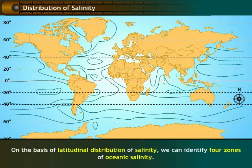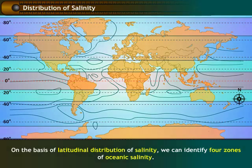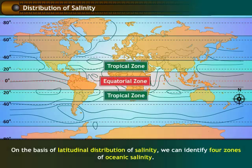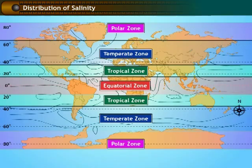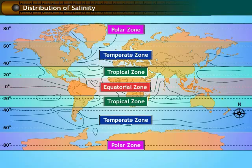On the basis of latitudinal distribution of salinity, we can identify four zones of oceanic salinity. These are the equatorial zone, tropical zone, temperate zone, and polar zone. Let us now study the distribution of salinity across open oceans, partially enclosed seas, and landlocked seas.